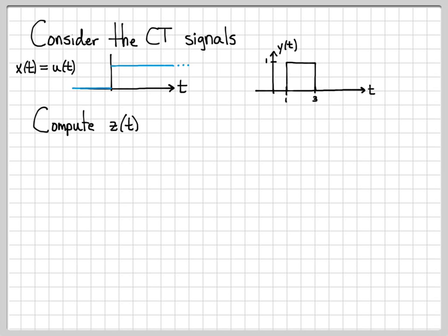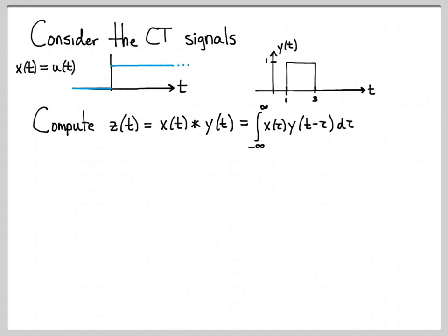What we are going to do is compute this new signal z of t. z of t is going to be equal to the convolution of x of t with y of t. This is the symbol we use for convolution, and we know that it's really just shorthand for solving the integral from minus infinity to infinity of x of tau times y of t minus tau, d tau.